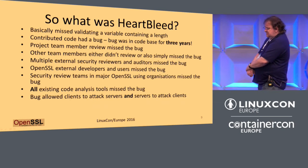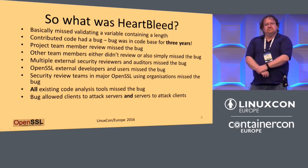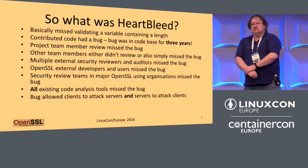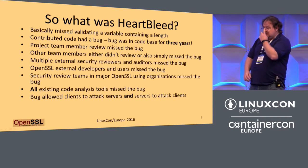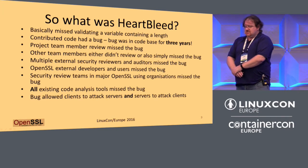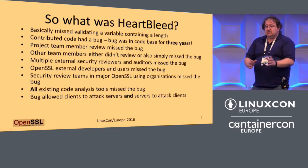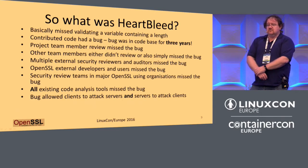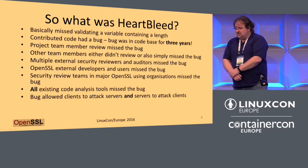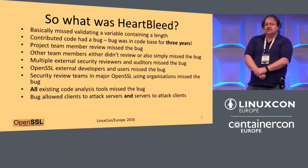So what actually happened? It's a pretty simple bug. There was a validation check, a variable that contained a length. The code was contributed into the tree. The bug had been in OpenSSL for three years. The project team member that checked the code didn't notice the bug. None of the other team members saw it. External security reviewers sailed right on by. All of the existing tools for static code analysis — none of them reported Heartbleed. Three days after Heartbleed was announced, they all reported it.